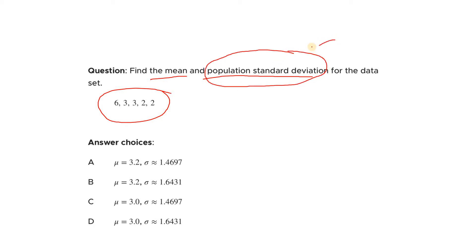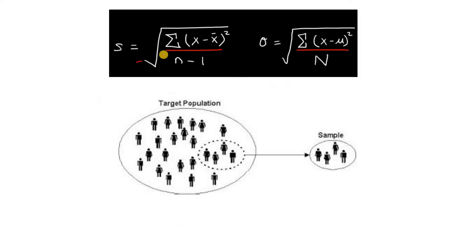Now, what about the population standard deviation? Here our trick is present. Remember, population standard deviation and sample standard deviation are not the same. The sample standard deviation formula is the square root of the summation of (x minus x-bar) squared — that is, how much each data point deviates from the mean — divided by n minus 1, where n is the total number of data points, and then we take the square root.